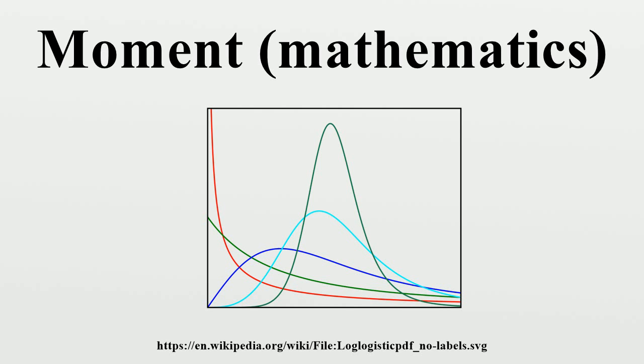Mixed moments. Mixed moments are moments involving multiple variables. Some examples are covariance, coskewness and cokurtosis. While there is a unique covariance, there are multiple coskewnesses and cokurtoses.